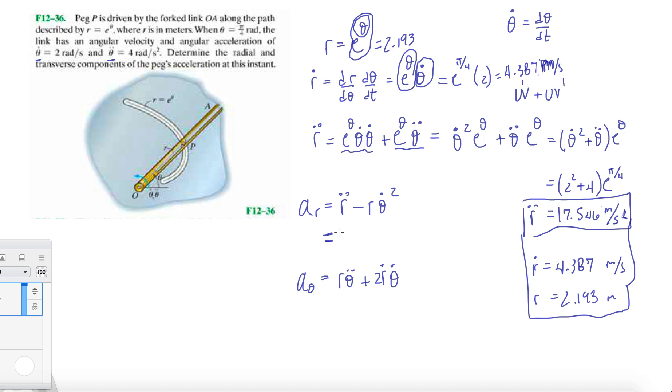In here we get 17.546 minus 2.193 times theta dot squared. Theta dot is 2 squared.